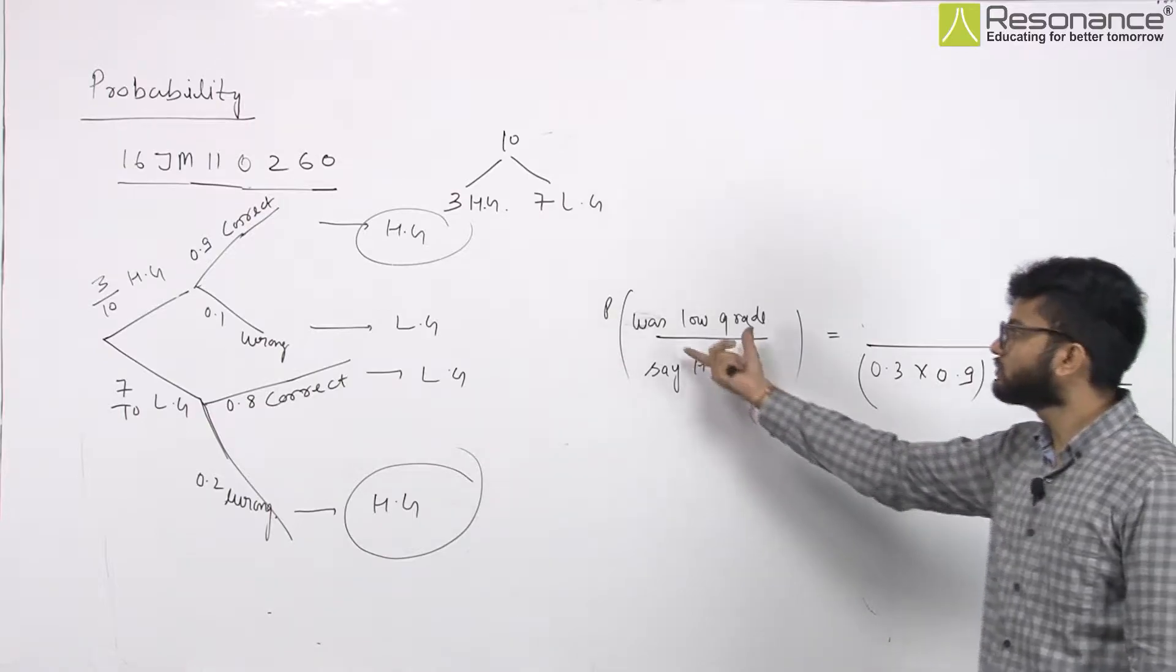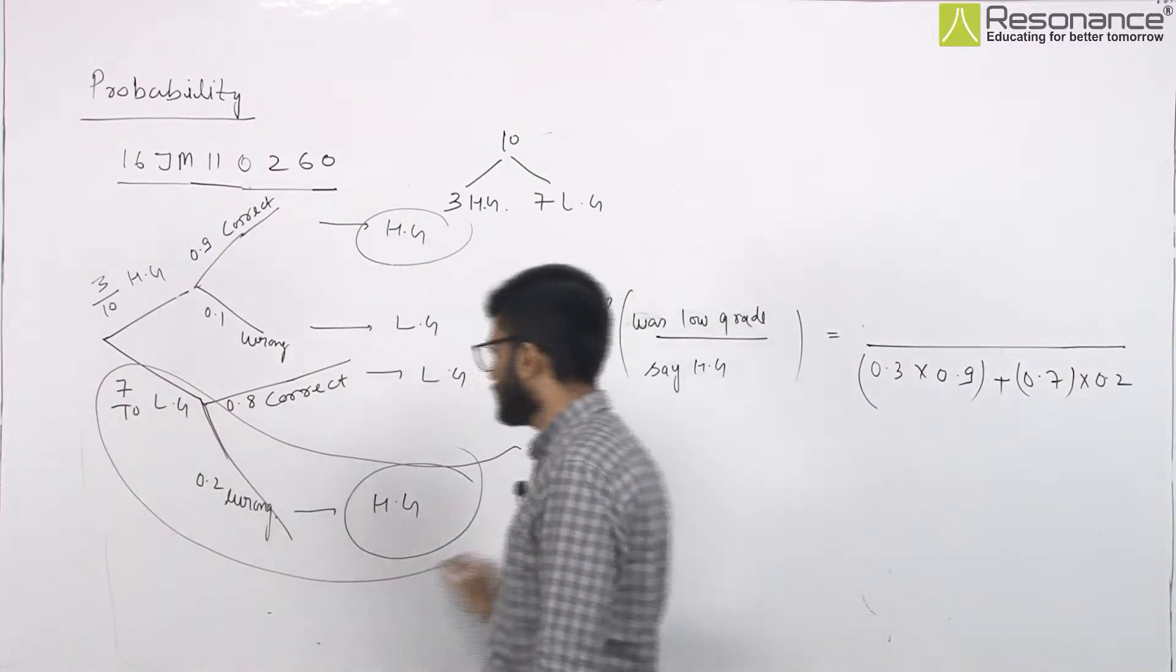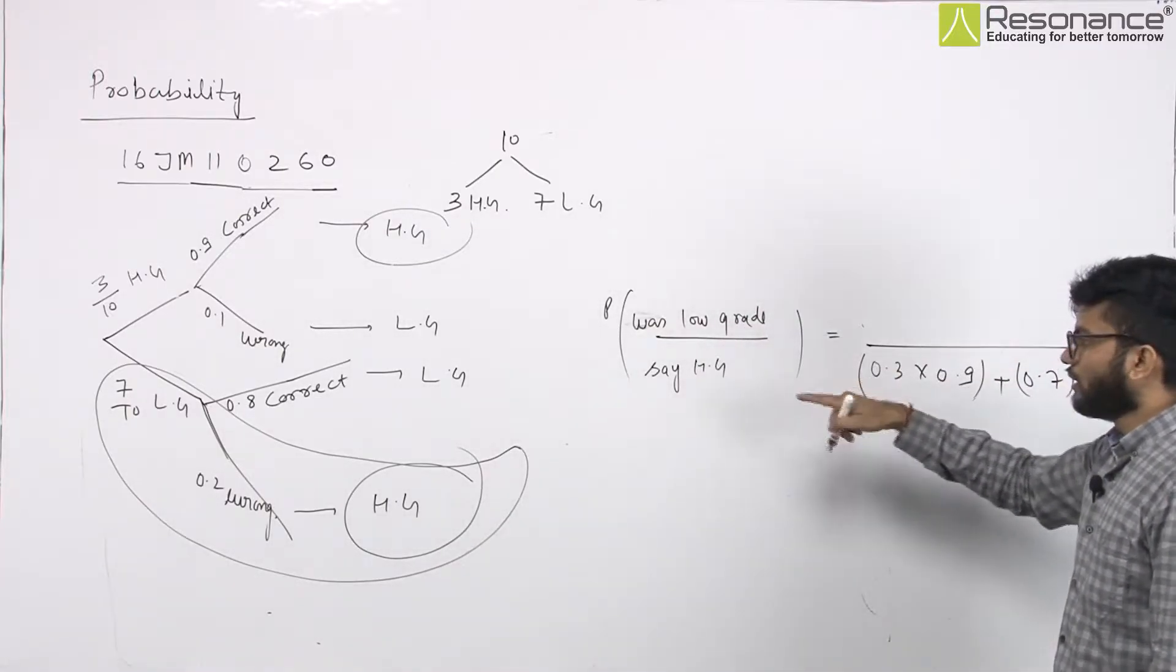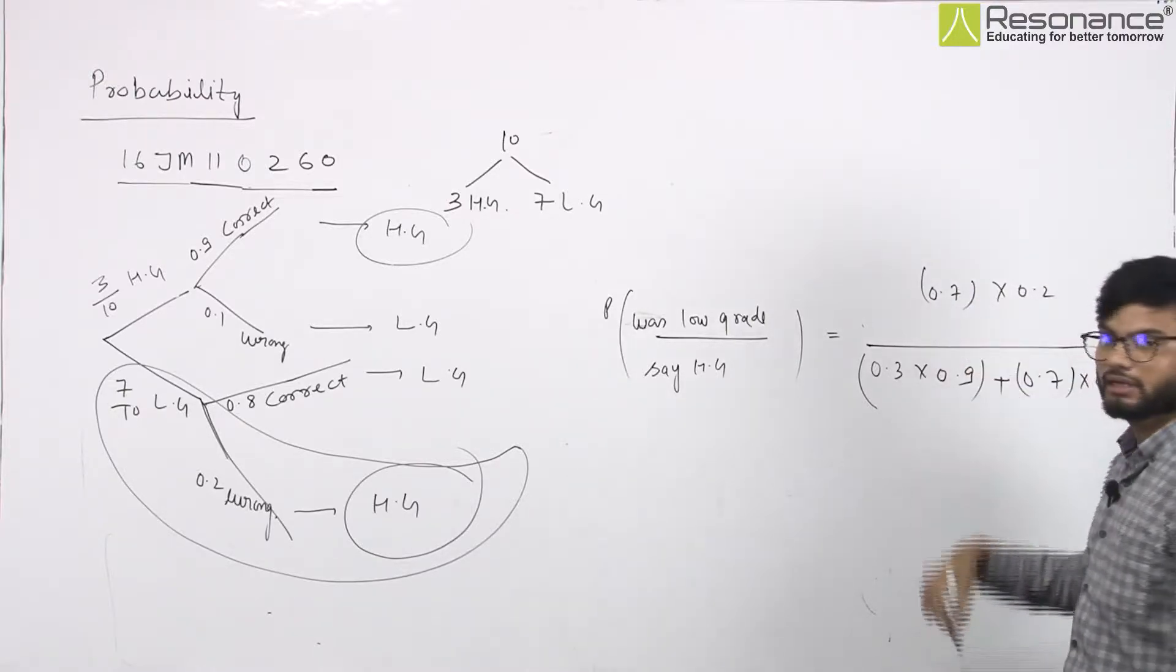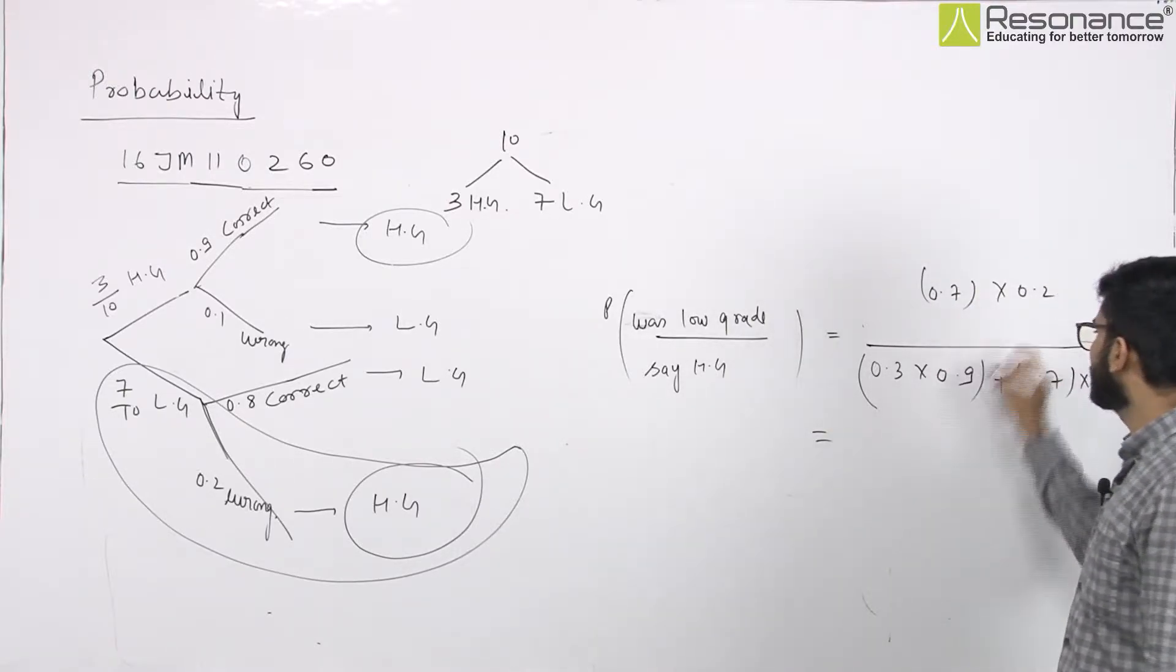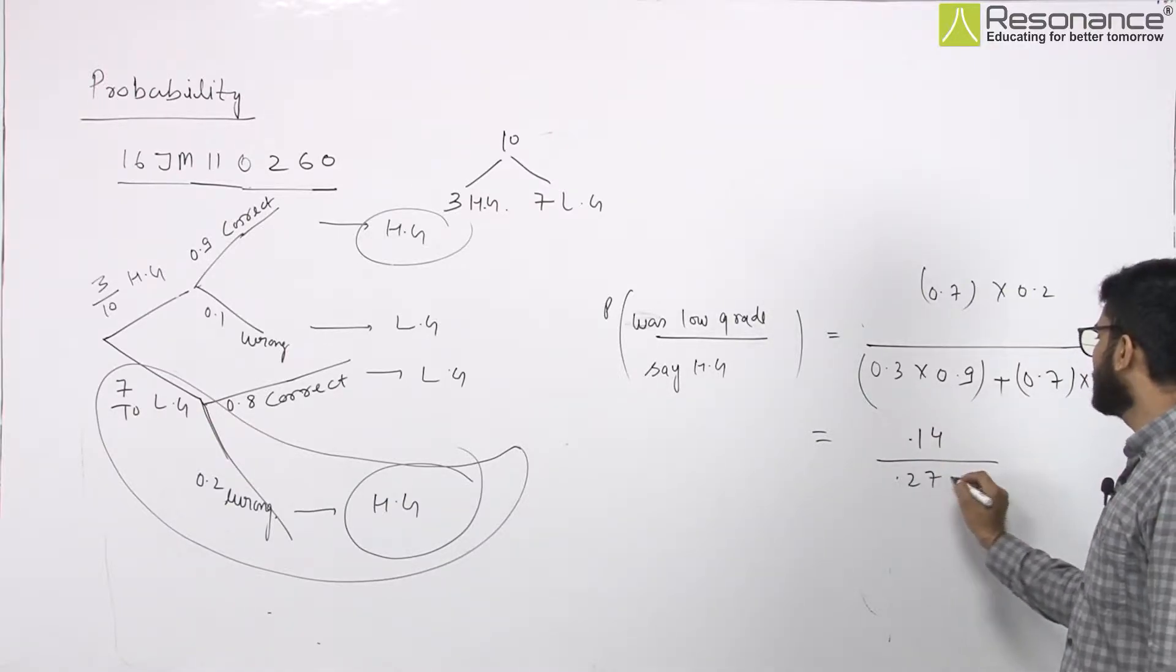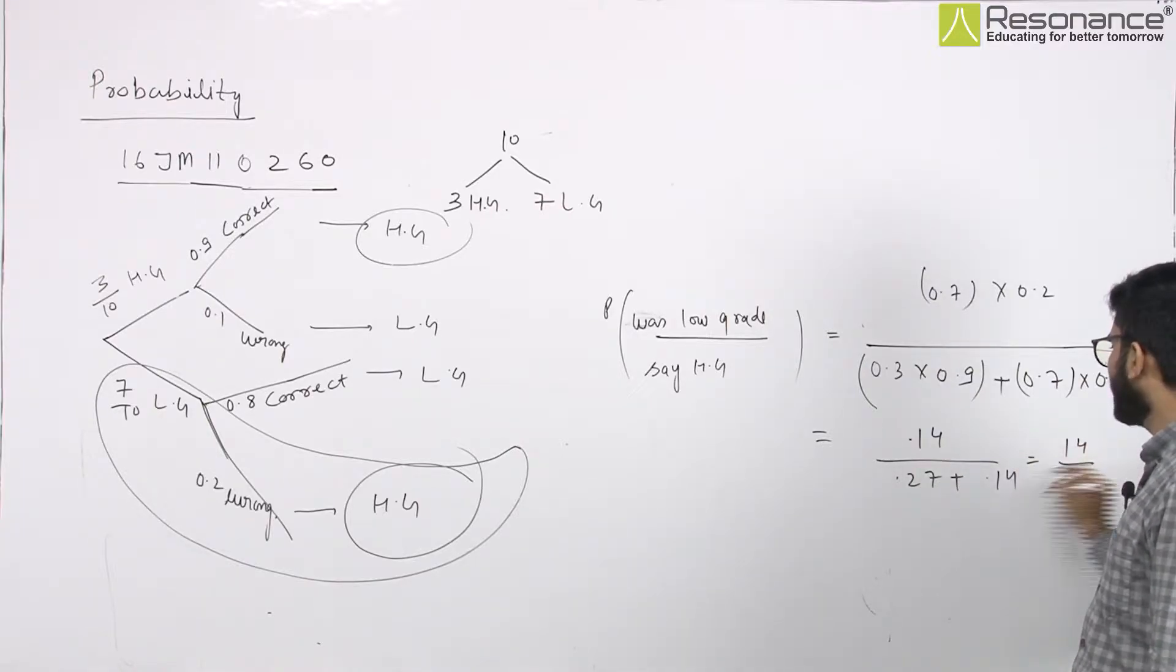Now they asked, which was low-grade. So if we ask which was low-grade, this is the only option. This will be a favorable case. So let's talk about it. 0.7 into 0.2. If we ask, this will become or not. So here we calculate it, it will become 0.27 and this will become 0.27 plus 0.14. So this will be calculated, point cancel, 14 upon 41.